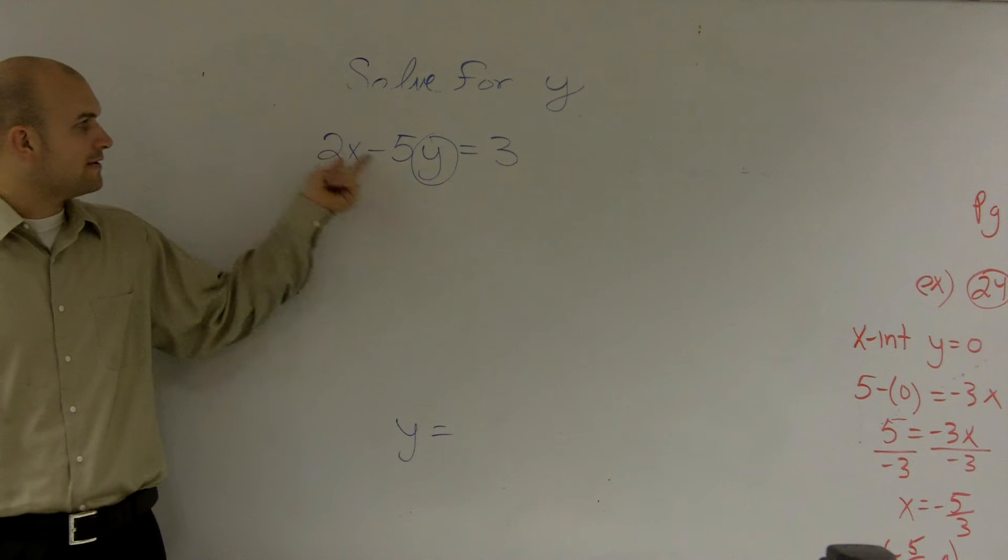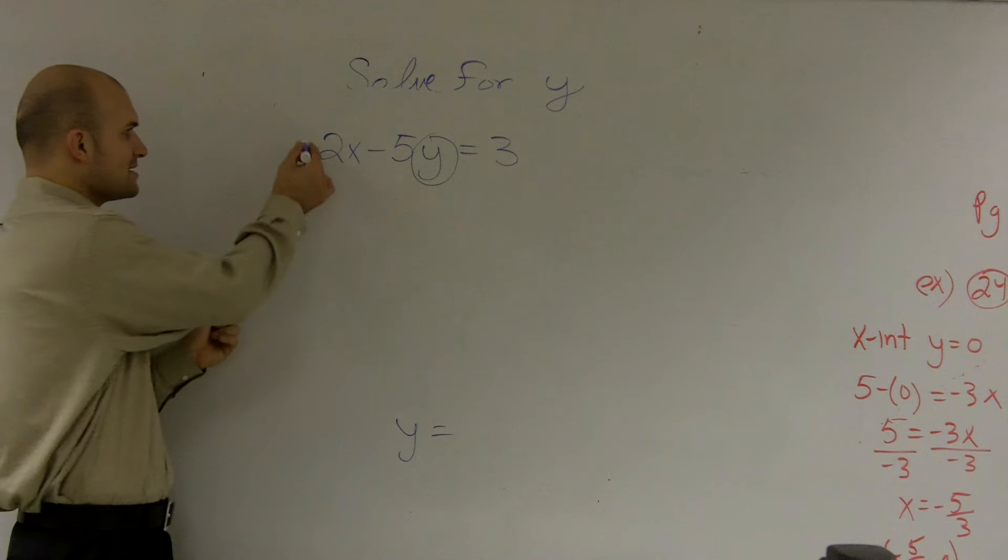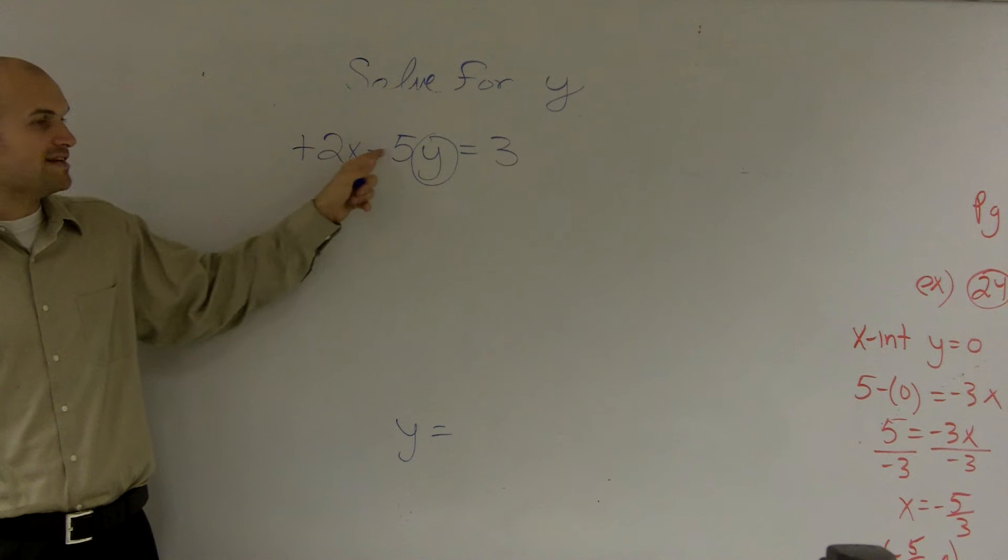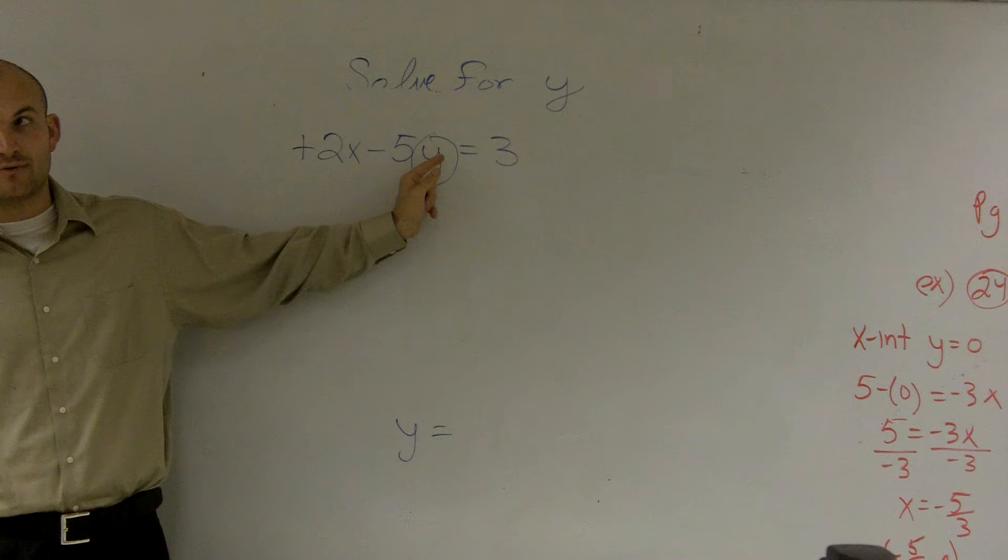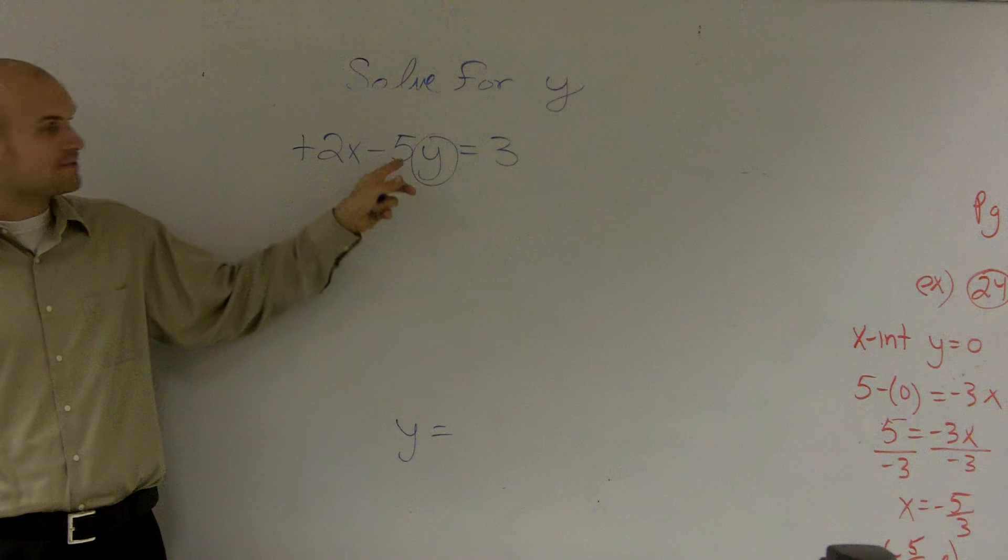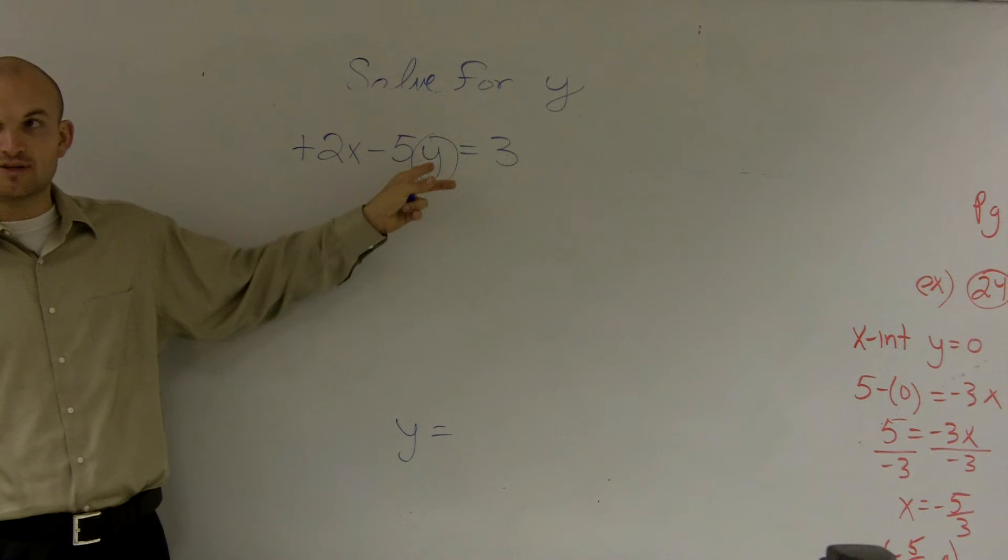So we look at what's happening to y. Well, I have a positive 2x, which means I'm adding a 2x, and I have a negative 5 being multiplied by the y. I'm not subtracting a 5. That's a negative 5, and it's being multiplied by your y.